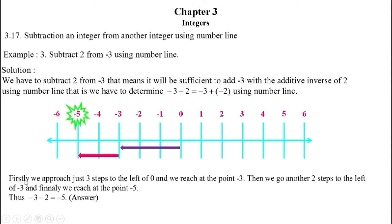Description: firstly we approach 3 steps to the left of 0 and we reach at the point minus 3. Then we go another 2 steps to the left of minus 3 and finally we reach at the point minus 5. Thus, minus 3 minus 2 equals minus 5.